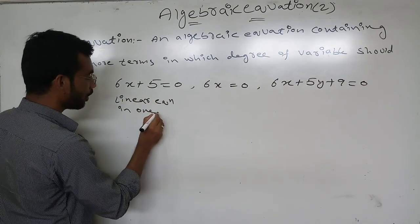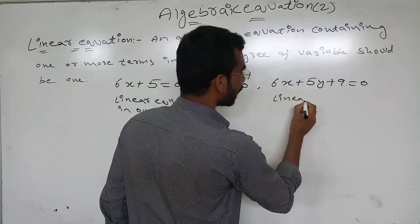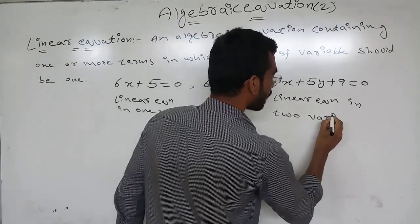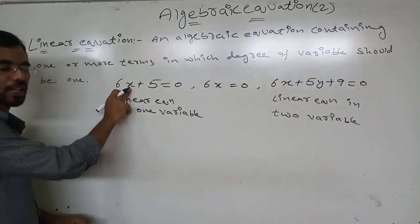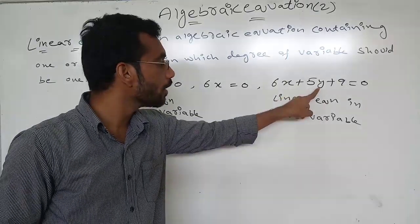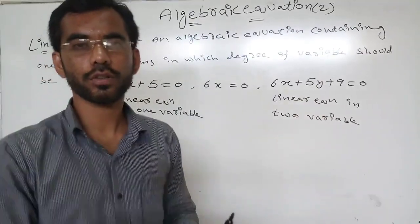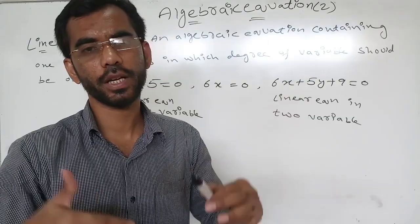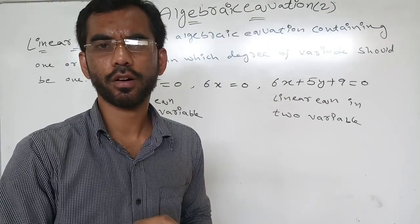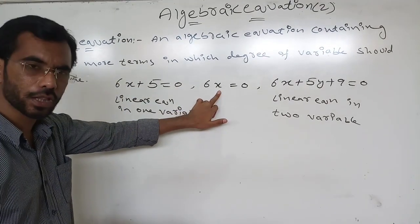When there is only one variable, it is called a linear equation in one variable. When there are two variables, such as x and y, it is called a linear equation in two variables. Remember, the variable does not have to be x and y — it may be p, q, r, or whatever. A variable is a letter or mathematical symbol which represents a number.